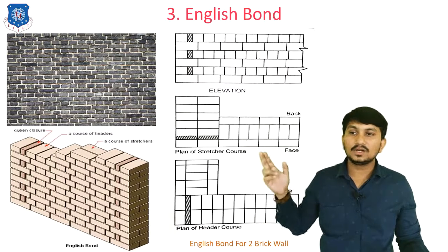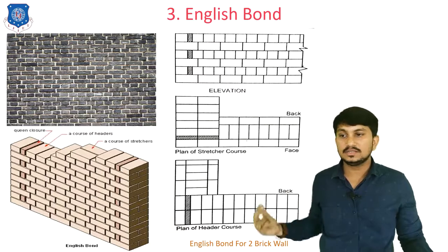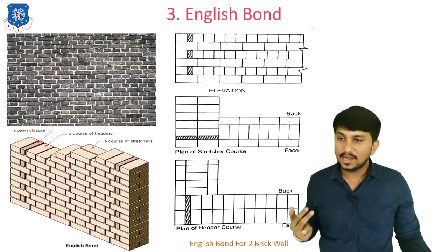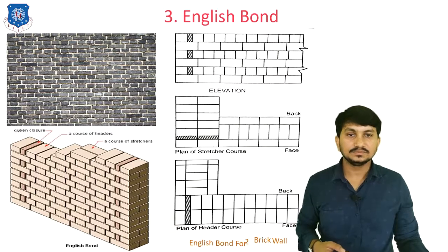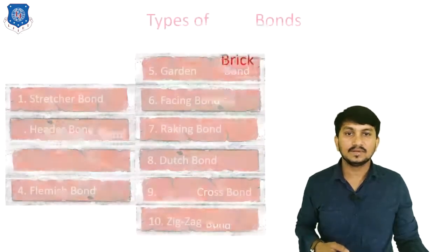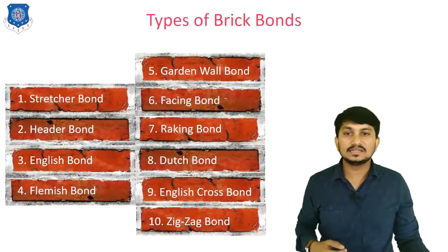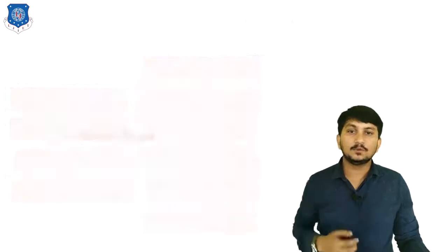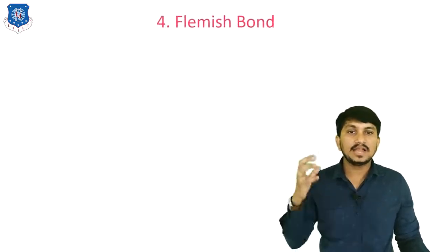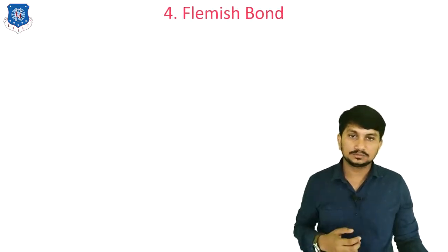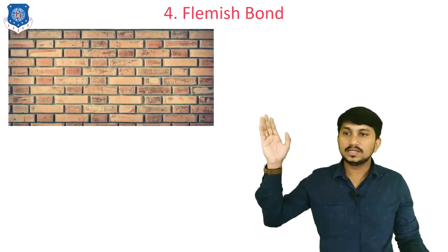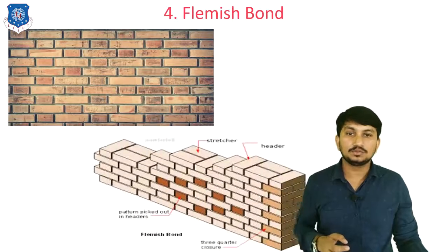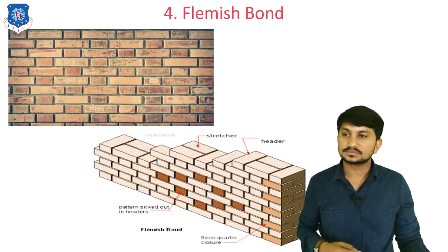Next is English bond for two brick walls. This is the layer for stretcher courses and this is the layer for header courses. Now let's discuss the fourth one, which is Flemish type of bond. Here is the image of Flemish bond.